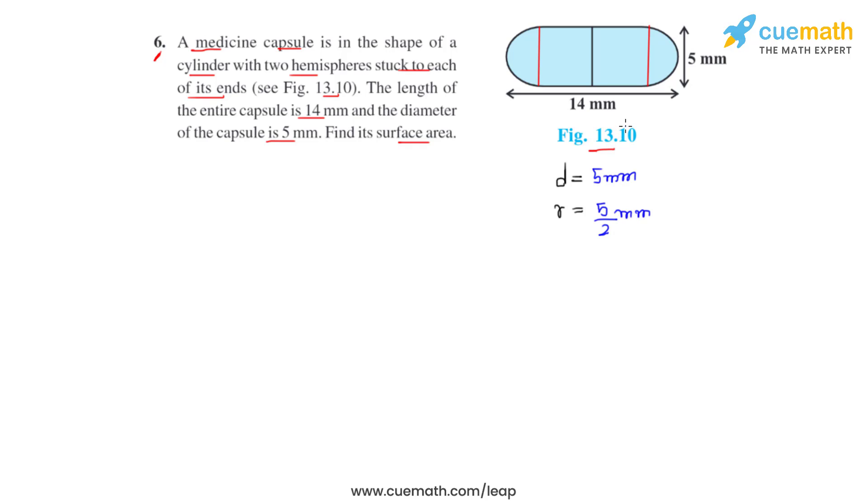Now the next part that we have to do is to find the height of the cylinder. Now the total length of the capsule is given as 14 mm. This part which is the radius will be 5 by 2 mm and this again on the other side will be 5 by 2 mm.